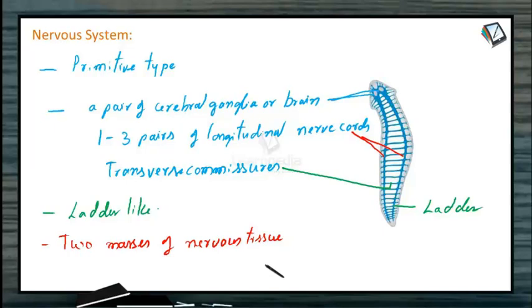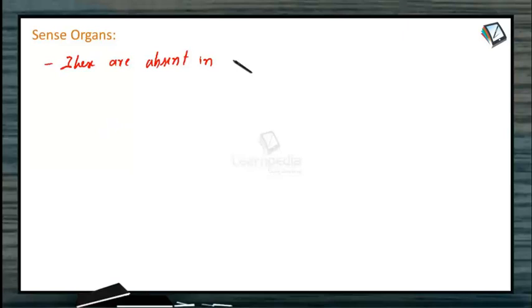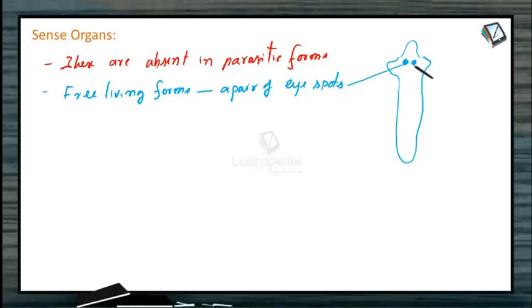Sensory organs: these are absent in parasitic forms, whereas in free living forms, there is a pair of eyespots, like flatworms. These are a pair of eyespots present in the anterior end or near to the cephalic ganglia. Generally, these eyespots are sensitive to light, and they can detect the intensity of light.